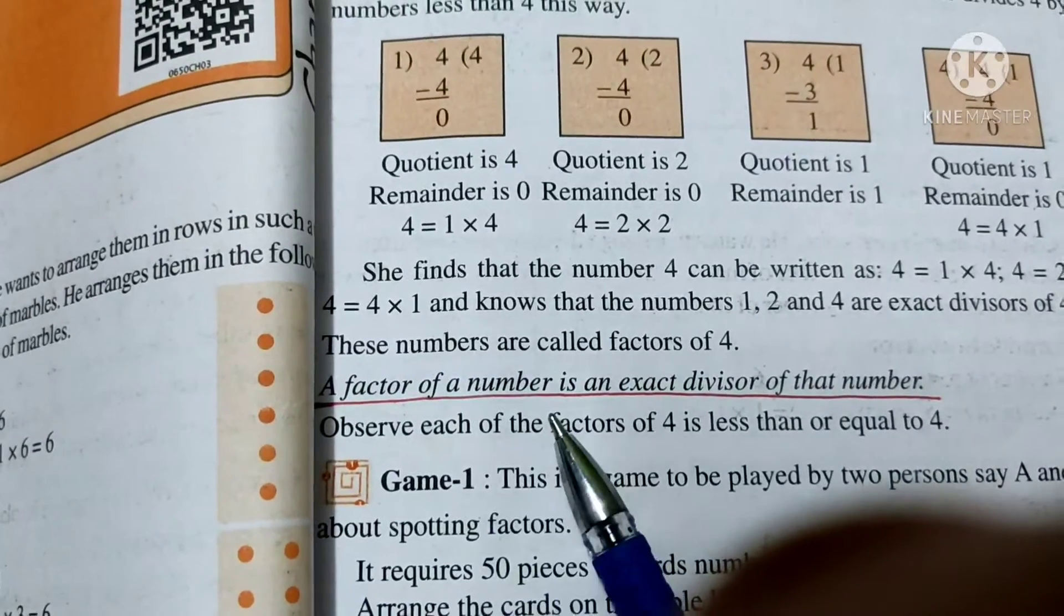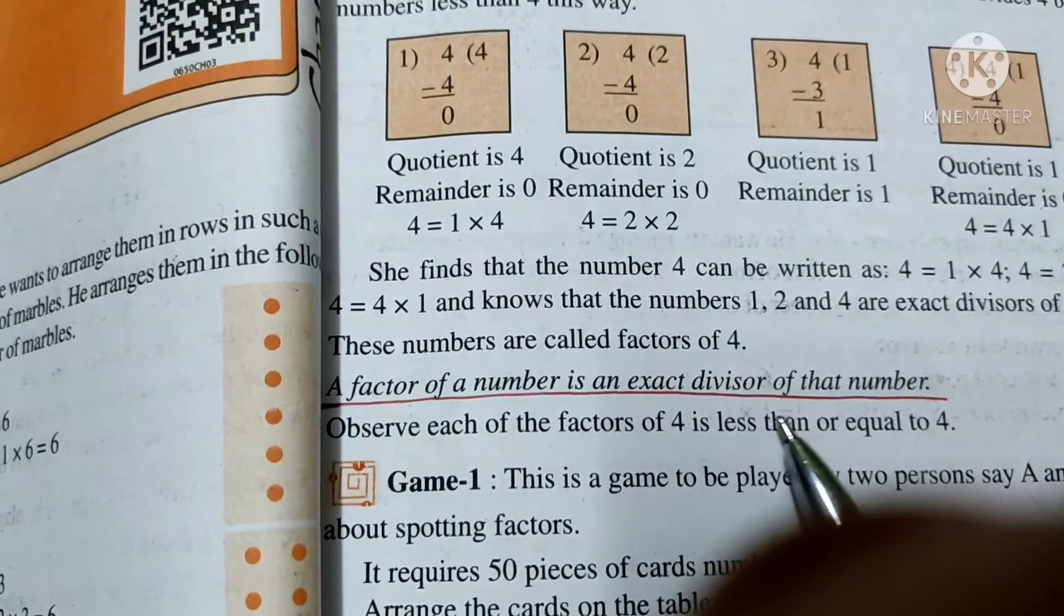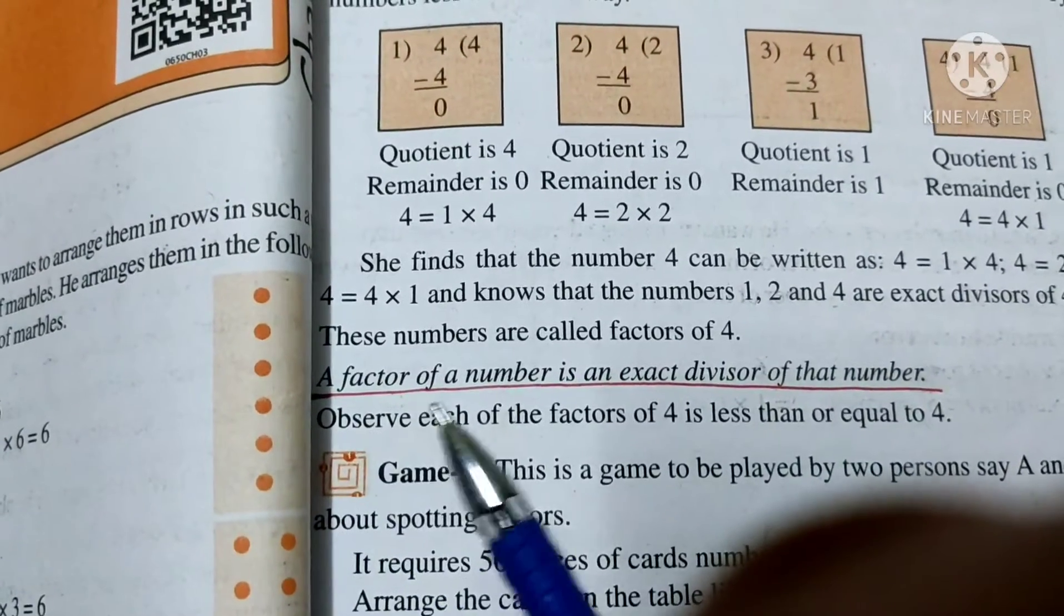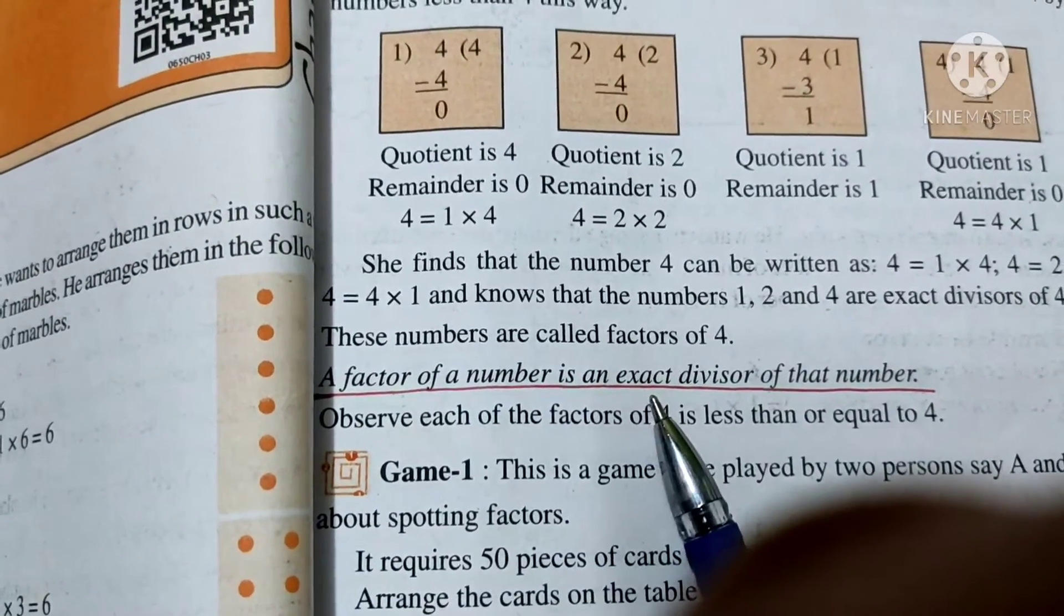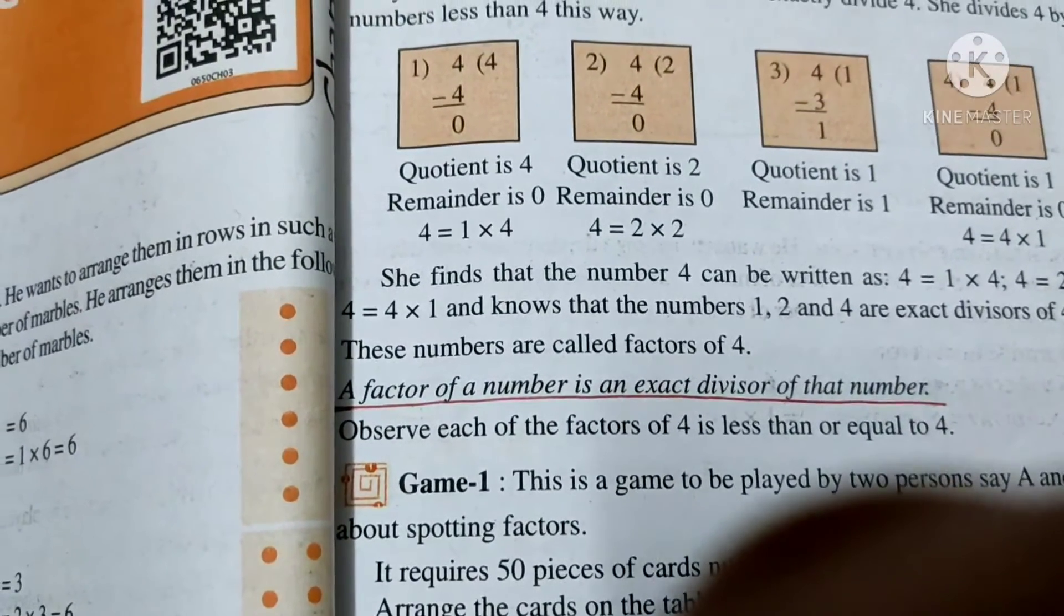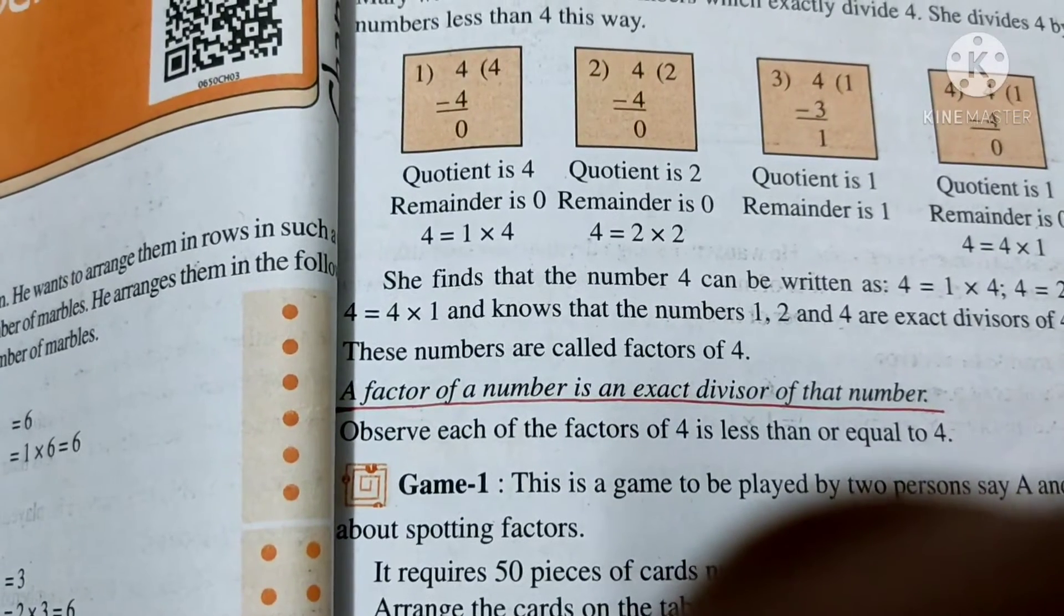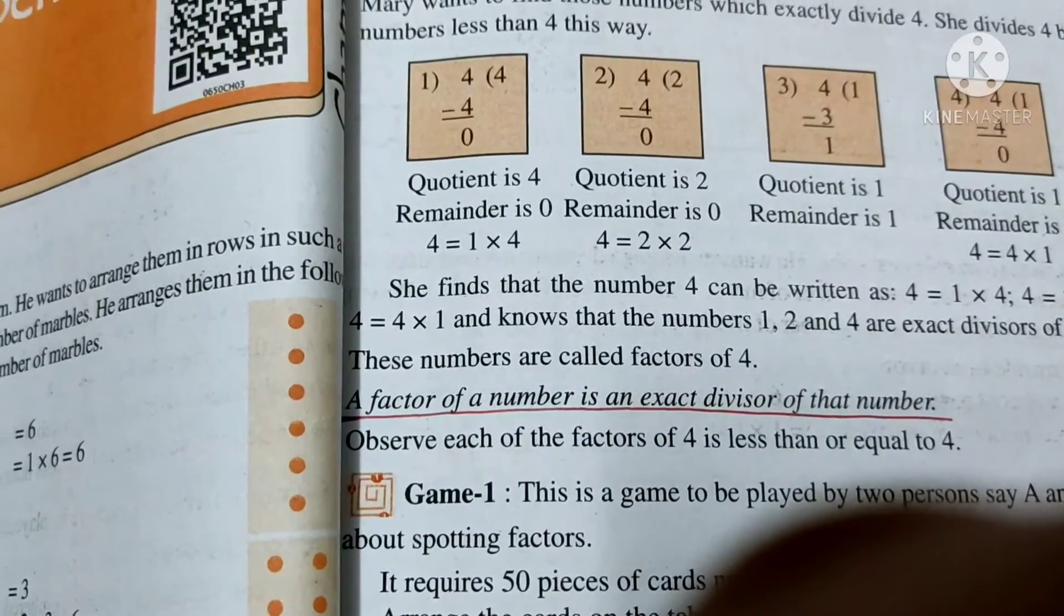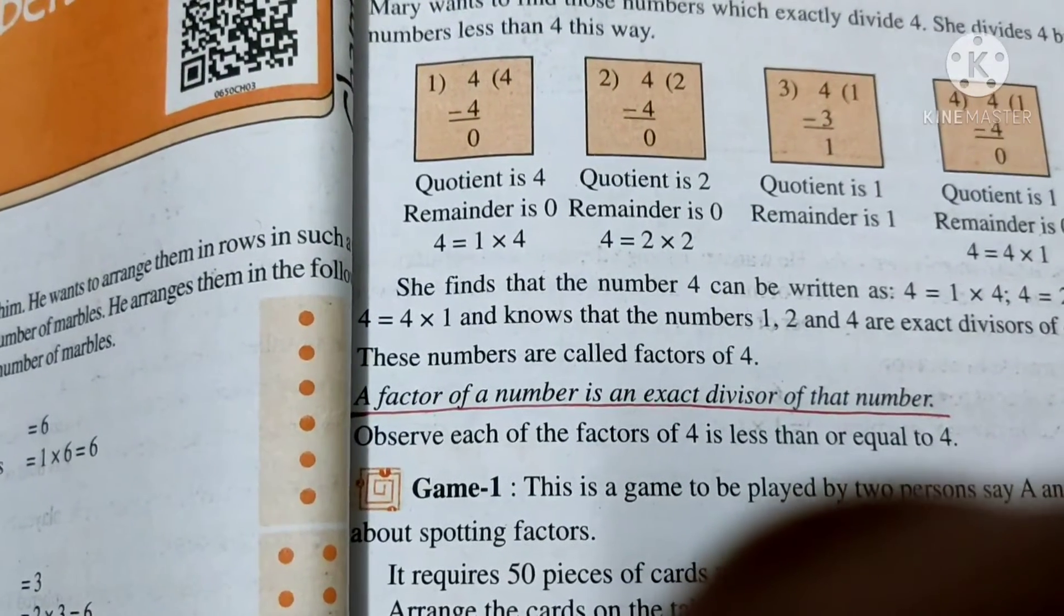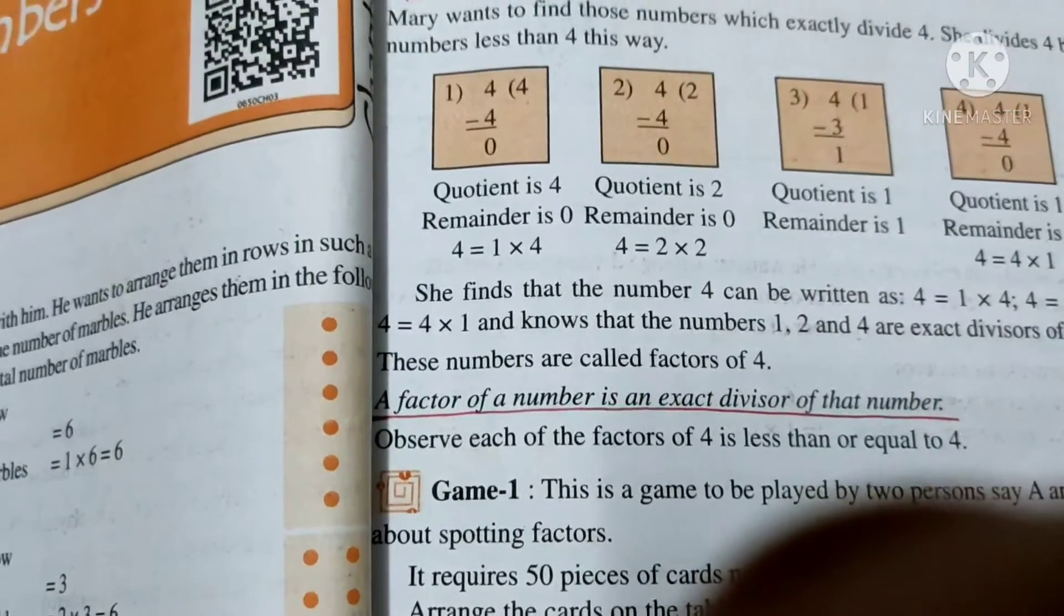Here I have underlined few things which are important for you to understand. A factor of a number is an exact divisor of that number. Let me explain - suppose the given number is 4, and any number can be its factor if it completely divides 4.